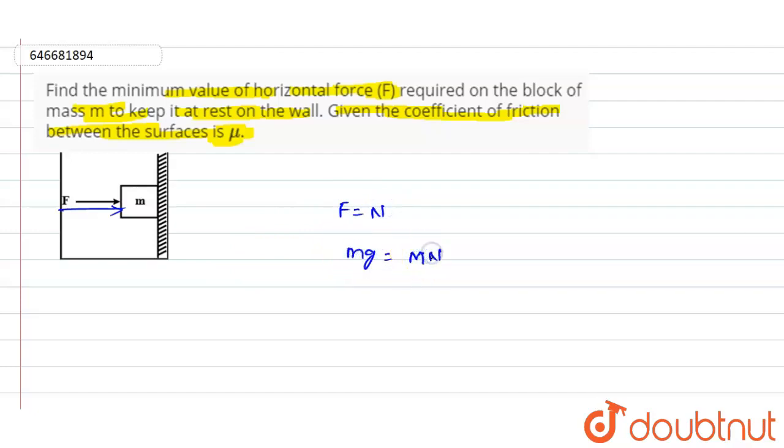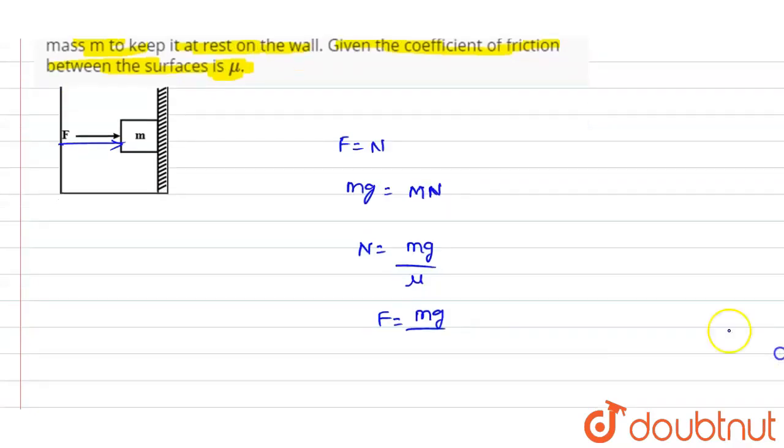Okay, so according to that, the value of N will be equals to mg divided by μ, and force value F will be equals to mg divided by μ. So this is the value of the force that we have got.